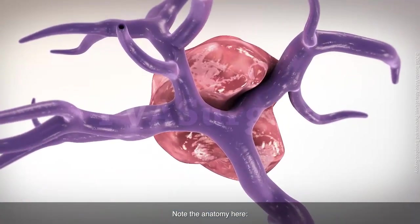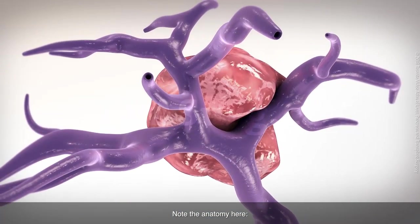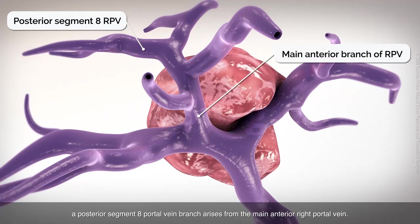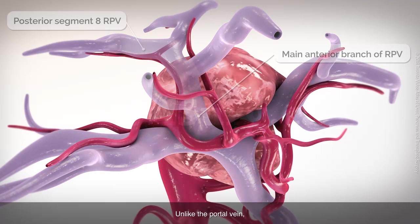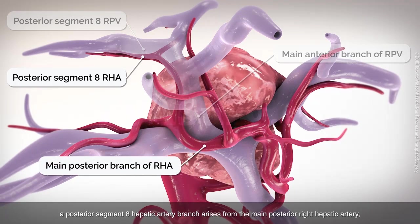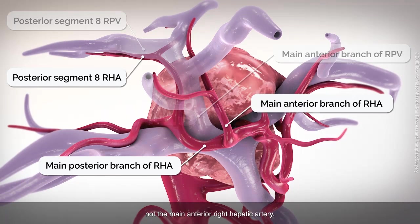Note the anatomy here. A posterior segment 8 portal vein branch arises from the main anterior right portal vein. Unlike the portal vein, a posterior segment 8 hepatic artery branch arises from the main posterior right hepatic artery, not the main anterior right hepatic artery.